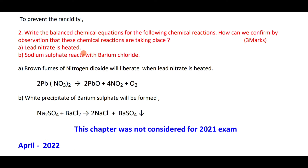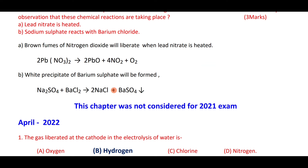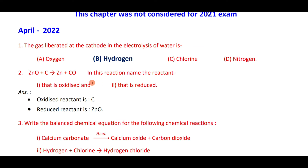Write the balanced chemical equation for the following: when lead nitrate is heated, we get lead oxide plus brown fumes of nitrogen dioxide and oxygen — this is a decomposition reaction. Sodium sulfate reacts with barium chloride to give 2NaCl plus BaSO₄ — BaSO₄ is the white precipitate. In the electrolysis of water, the gas at the cathode is hydrogen and at the anode is oxygen.